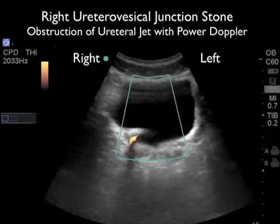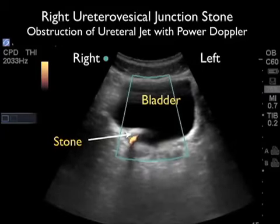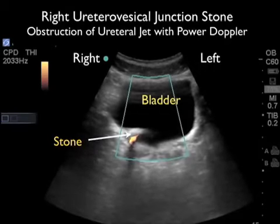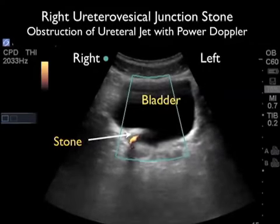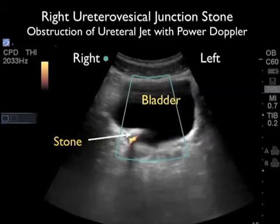When evaluating a patient with a possible kidney stone and hydronephrosis, you should also examine the bladder — you may be able to visualize a stone at the left or right ureterovesicular junction. Here's a case where a patient presented with right flank pain and right hydronephrosis. Looking at the bladder in short axis configuration with the marker dot towards the patient's right, we see a hyperechoic, shadowing stone at the right UVJ. Applying Doppler sonography, we can see the ureteral jet is blocked by this one centimeter stone. This patient ultimately required cystoscopy to remove the large stone and relieve the obstruction.